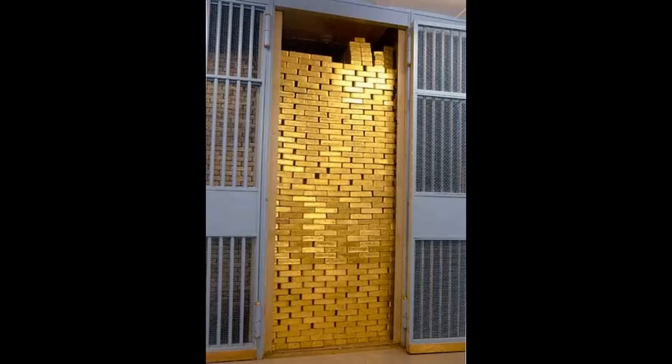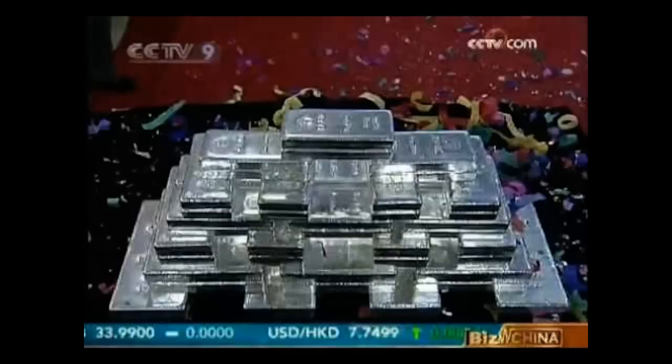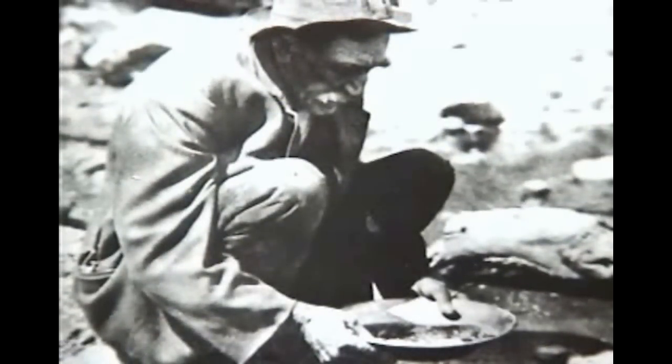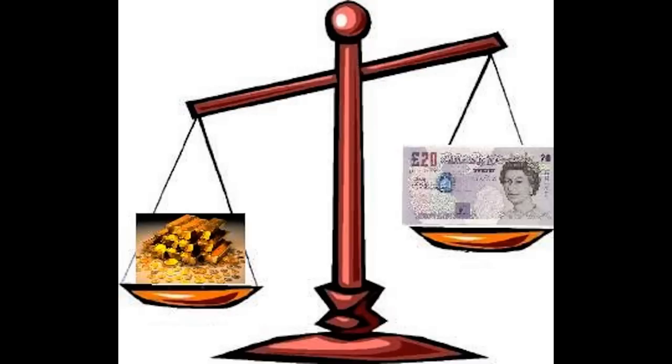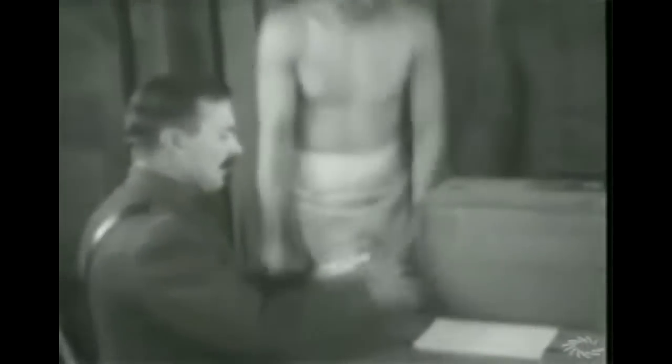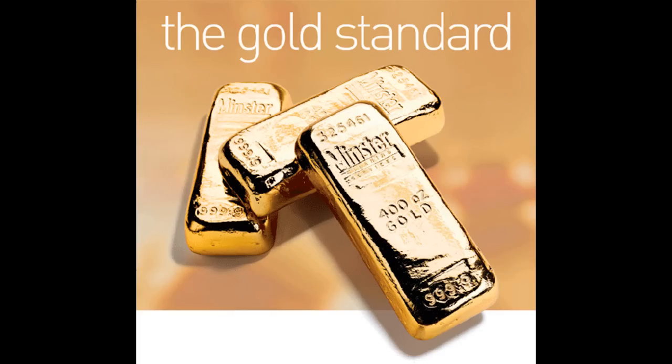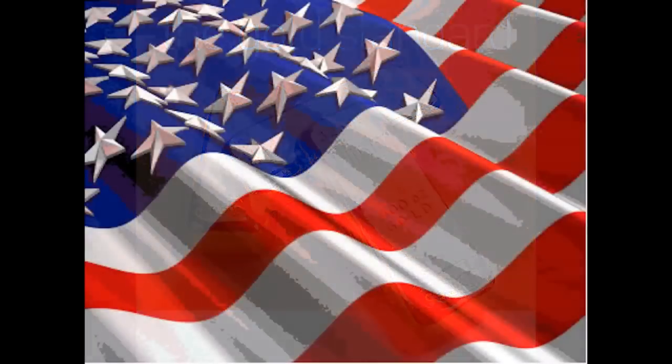Banknotes were later backed by the nation's reserves of gold and silver instead of actual coins. The British pound was promised to be the closest equivalent in gold. With the outbreak of World War I, Britain abandoned the gold standard — the system of backing banknotes with gold. They attempted to bring it back, but during the 1920s it finally ended during the Great Depression.